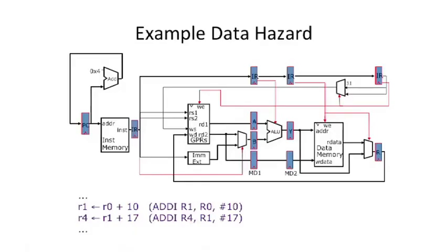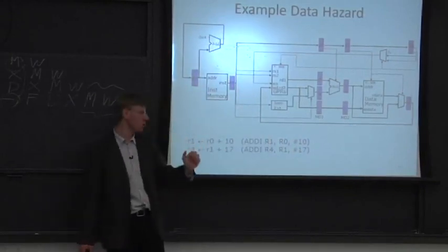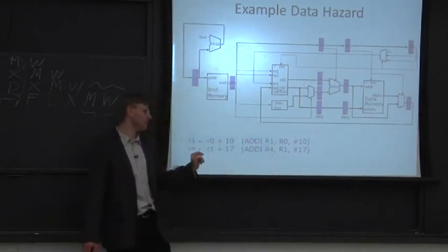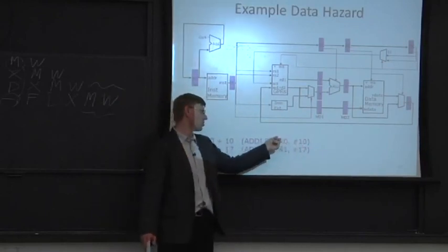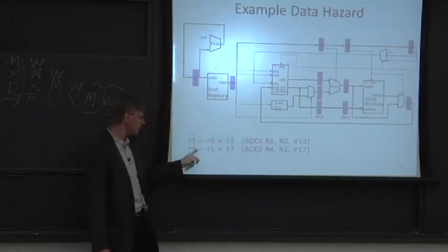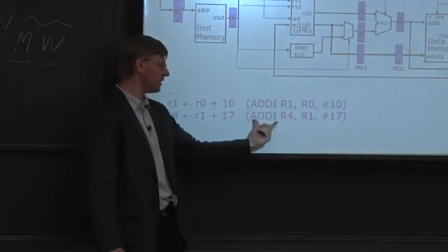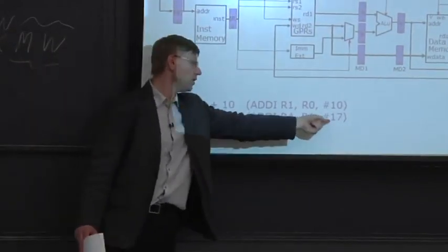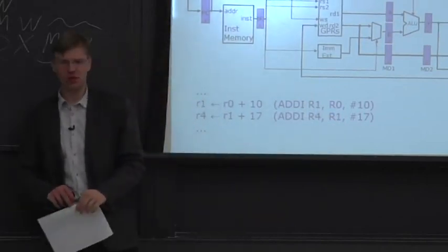Let's look at an example data hazard executing on our processor pipeline. We have two instructions. The first is an add-immediate: R1 = R0 + 10. In MIPS, R0 is hardwired to 0. The second instruction exhibits a read-after-write data dependence: it takes R1, adds 17 to it, and deposits the result into R4. This second instruction uses the result of the instruction immediately before it.